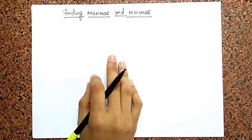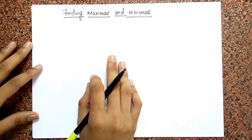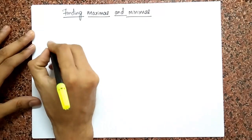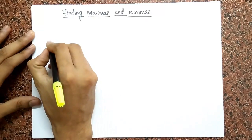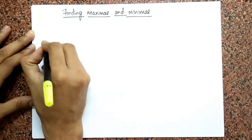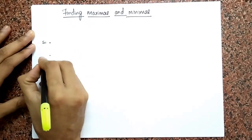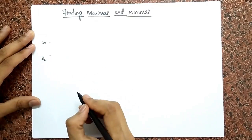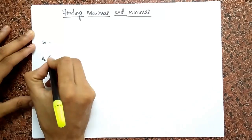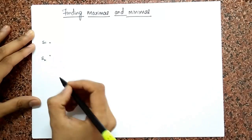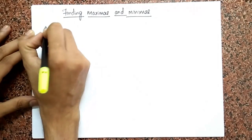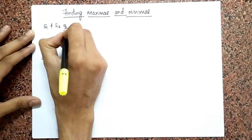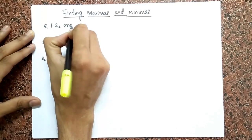I'm going to talk about finding maximas and minimas. Suppose I have two sources, S1 and S2, and let's say that they are coherent sources.